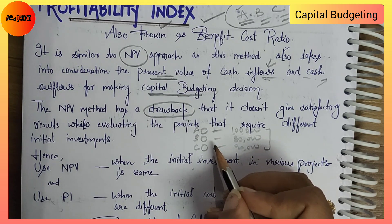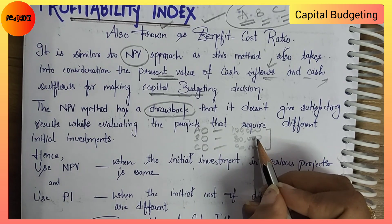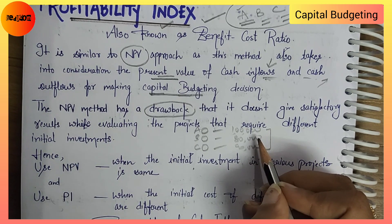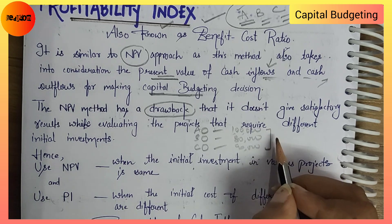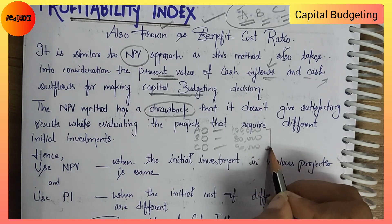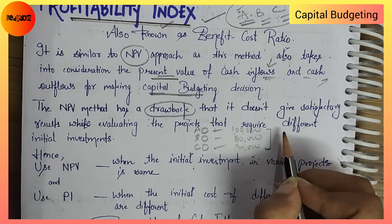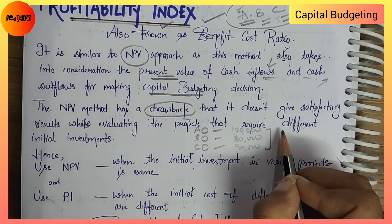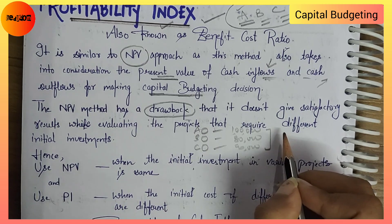Why does NPV method fail here? In the NPV method, you take the present value of inflows and subtract the present value of outflows. Then you go with the project where NPV is highest — but this completely ignores the scale of the initial investment.